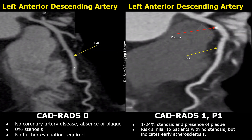CADRADS-0 is given for normal arteries. In CADRADS-0, there is no stenosis or presence of plaque in any coronary artery, and no further evaluation is required. This is the left anterior descending artery. Its lumen is enhancing normally, and there is no narrowing. Neither hyperdense calcified plaque nor low-density thrombus is present. In the image on the right,